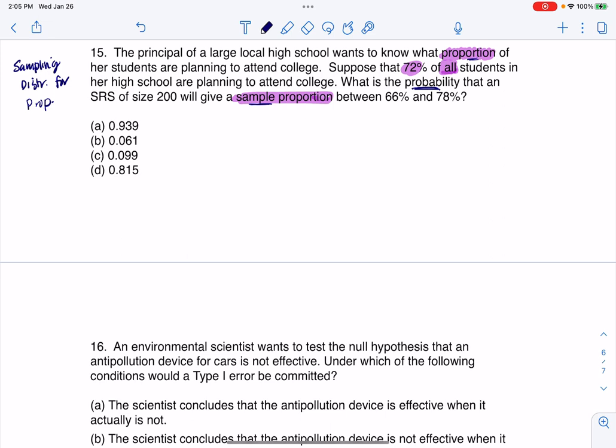So this is going to be a Chapter 7 problem. And you might be thinking, how did I know it's not Chapter 8? They didn't ask you anything about a confidence interval. It's not Chapter 9. They didn't ask you about a hypothesis test. They're asking you about a probability, so that puts us back in Chapter 7.